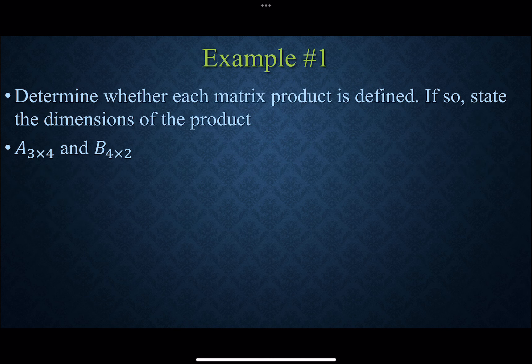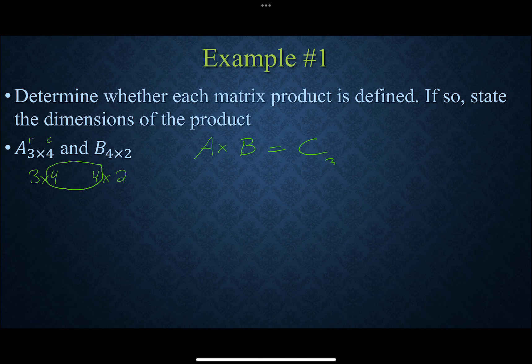Looking at these two matrices, we just want to determine if this product is defined. Matrix A is 3 by 4, and matrix B is 4 by 2. The inner numbers — columns of A and rows of B — both equal 4, so they match. The resulting matrix C = A times B will be 3 by 2, taken from the outer numbers: rows of the first and columns of the second. So this multiplication is defined and would work.